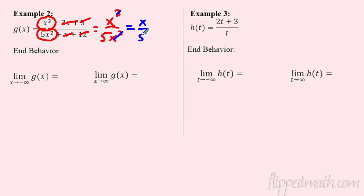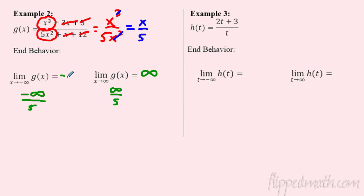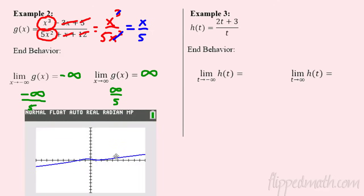Now plug infinity in: infinity divided by 5. Think of a trillion divided by five people — you still get a lot. As this grows infinitely large, dividing by five won't slow it down. It goes to positive infinity. How about negative infinity? Plug that in — negative infinity divided by 5, you're getting infinitely small. It goes to negative infinity. The sign really matters here — plug each one in individually. Checking the graph: going right it goes to infinity, going left it goes to negative infinity. The numerator dominated.